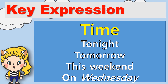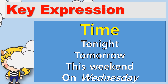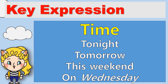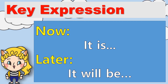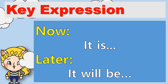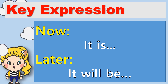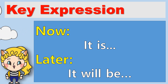For time, you can use words like tonight, tomorrow, this weekend, on Wednesday, on Tuesday, on Friday. If you ask about the weather now, you answer: it is. But if you ask about the weather later — like tomorrow, tonight, this weekend — you will say: it will be. So, it is, or it will be.